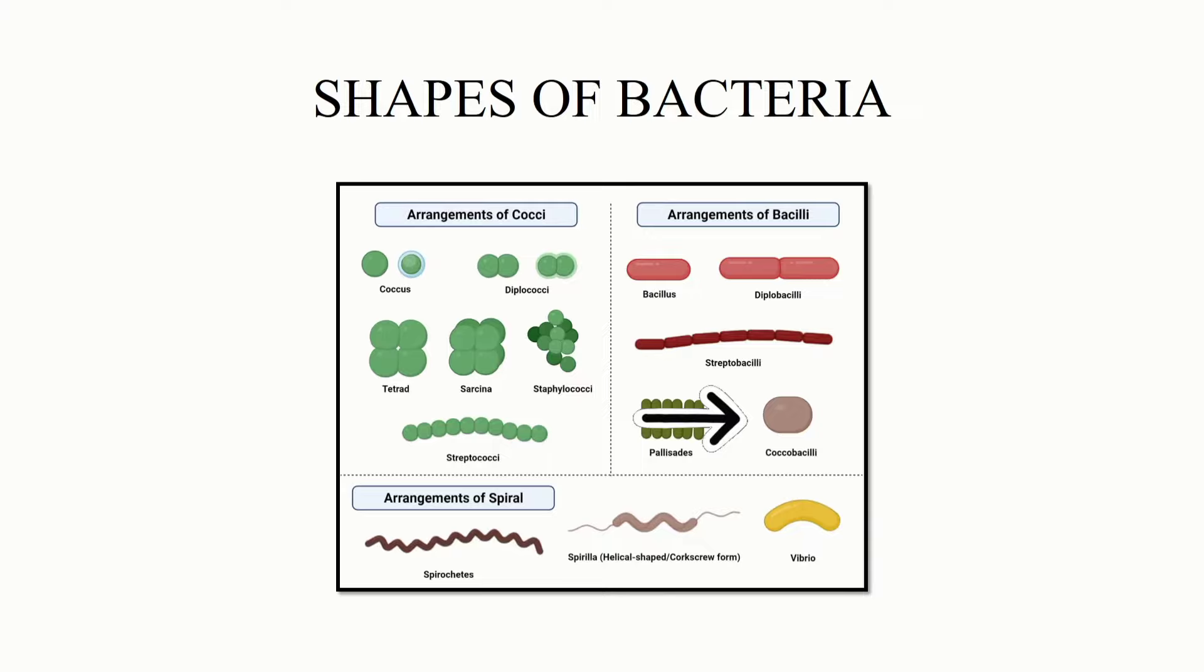Arrangement of spirals: single is called spirochetes. This is called spirilla because it is helical-shaped or corkscrew form. And then we've got vibrio, it is just like this yellow one.